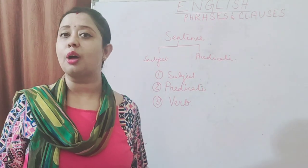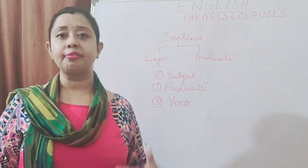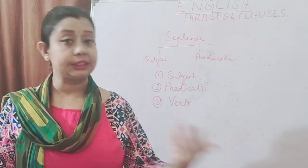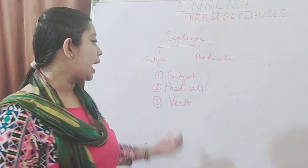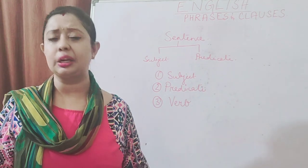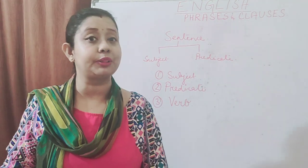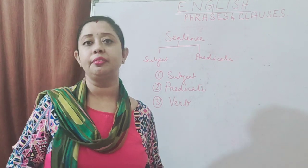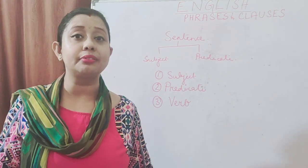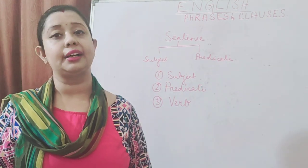If I don't have a topic, how will I construct a sentence? Therefore I need a subject. Now I have the topic but I don't know what to say about it — that means I don't have a predicate, so I will not be able to write or speak either. And what does a verb do? It tells us what action we do. There are more functions of verb, but right now you have learned that verbs tell us about action. So how will I express what action I am doing if I don't have a verb? Therefore these three things are essential to write a sentence.